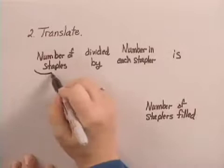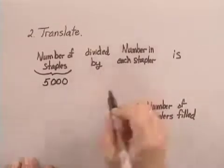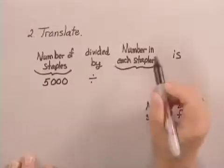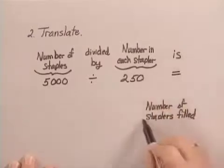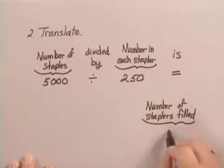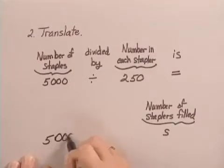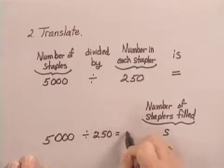So we have the number of staples in the box was 5,000, divided by the number in each stapler is 250, and the number of staplers filled we said was S. So we have the equation 5,000 divided by 250 equals S.